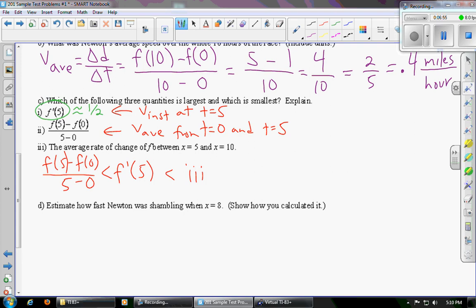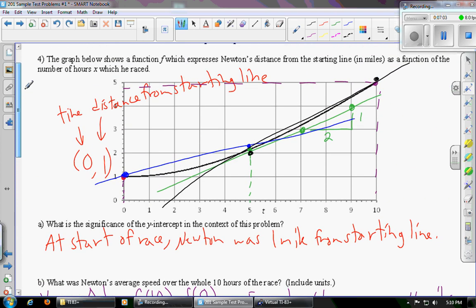Okay, and then finally, part D. Estimate how fast Newton was shambling when x equals eight. Show how you calculated it. So we actually did something quite similar to this when we did the previous question. But all we're looking at is time t equals eight. So we'll try to put one more color dot here. We'll make this one red. And how fast he was going is just the slope of the tangent line that hits that point. And so we draw our best approximation of a tangent line. And then we try to read something through all this mess of lines. So the only one I care about right now is the red one.